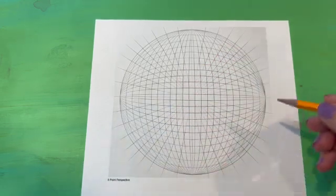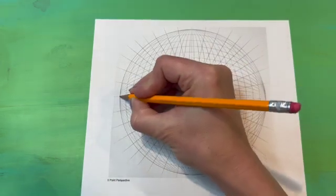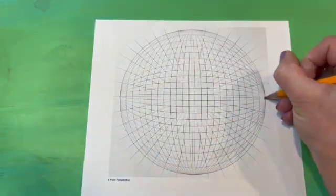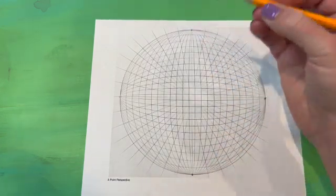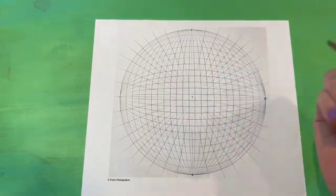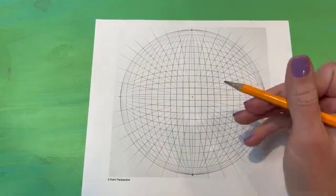Today I'm doing five-point perspective. I found this on Google and printed it off, and these are the five points we'll be using: one on each side, one on the top and bottom, and one in the middle.